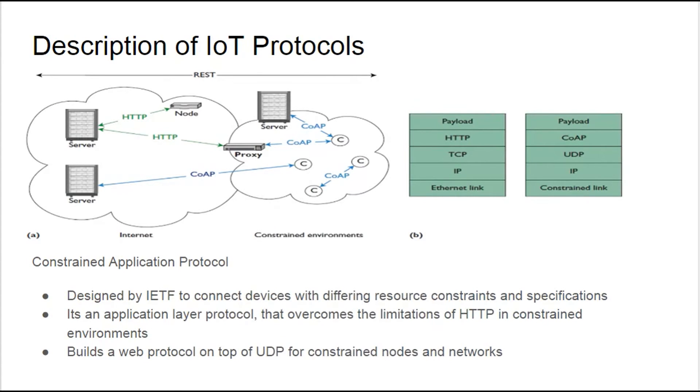Before we compare IoT protocols, we can have a brief discussion of the protocols themselves. First, we consider Constrained Application Protocol. It was designed by the IETF to connect devices with different constraints and specifications. As the name suggests, it's an application layer protocol. It overcomes the limitations of HTTP protocol, which is not suitable for constrained environments, and it's built upon UDP and is suitable for constrained networks and nodes.